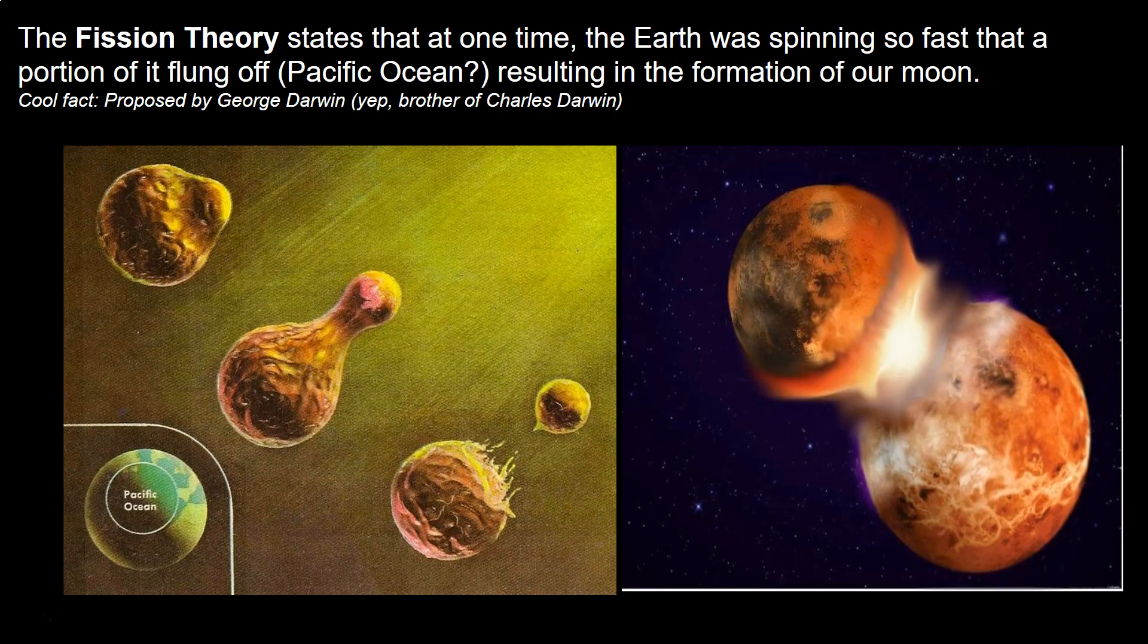The next theory is the fission theory. This states that at one time Earth was spinning so fast that a portion of it flung off the Pacific Ocean, resulting in the material forming our moon. This was proposed by George Darwin, the son of Charles Darwin.